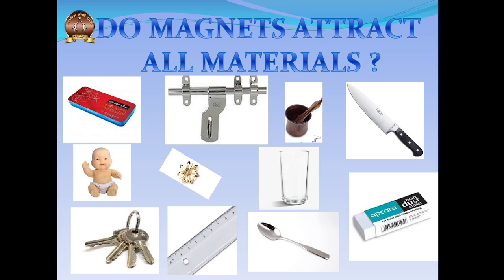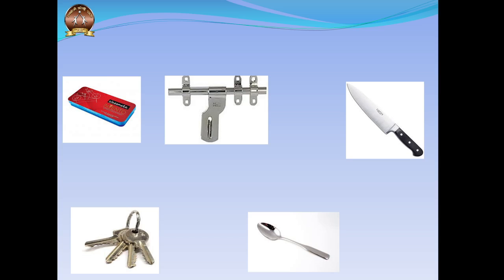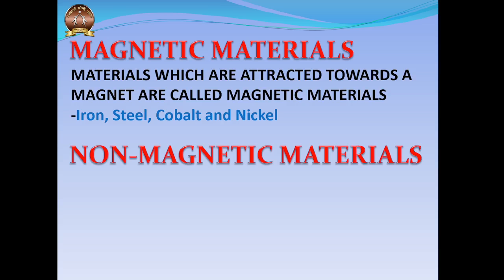Do magnets attract all materials? Take a look at these pictures — can you find out the kind of materials which would be attracted to magnets? When you filter them out, you understand that a metal instrument box, a lock, a knife made of steel, keys, and a metal spoon are all objects which can get attracted to magnets. The others, made of plastic, rubber, glass, and other such materials, are not attracted to magnets. Even metals like gold and silver are not attracted to magnets.